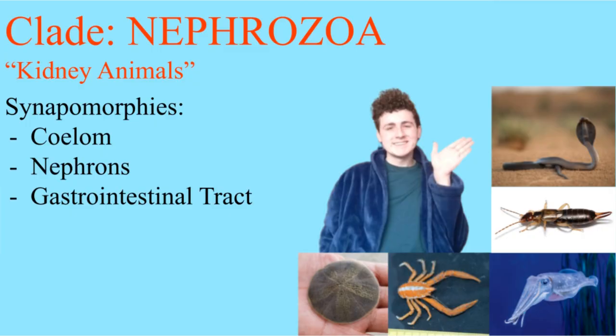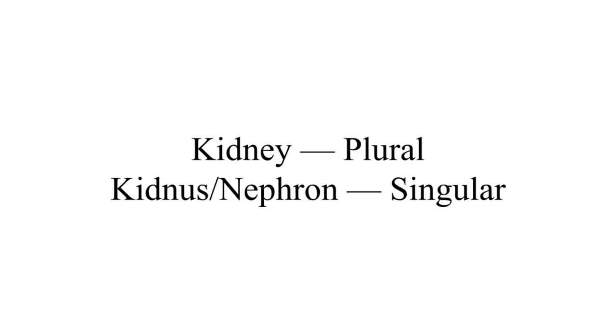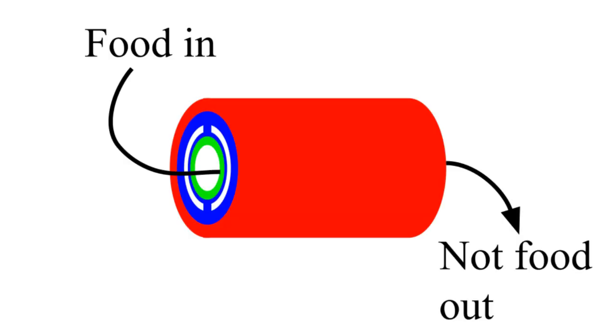The other group is nephrozoa, kidney animals. So called that because they also have nephrons, which are these tiny little things that make up your kidneys. They filter the water in your body, and the third of their synapomorphies is the gastrointestinal tract.